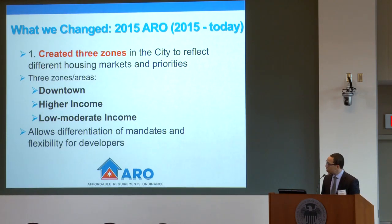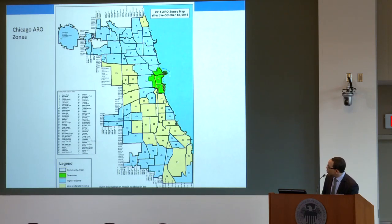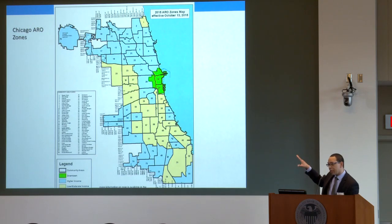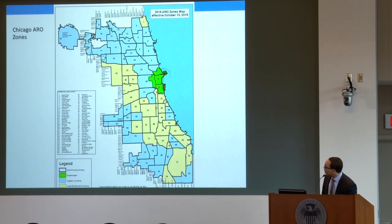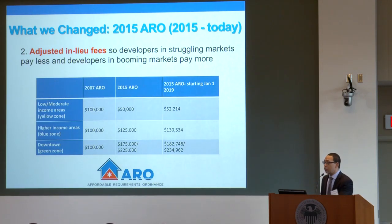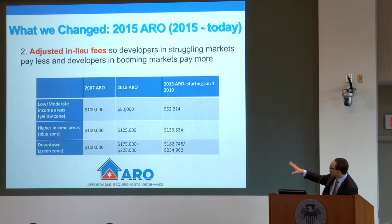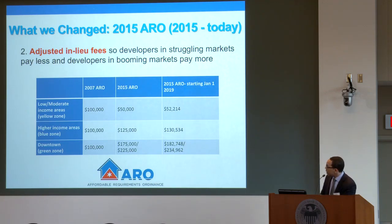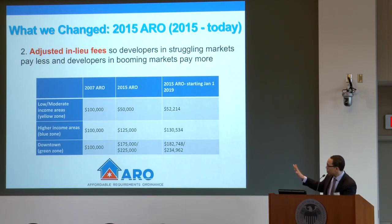The requirements under the ARO are different for the different areas. Here's a map showing the downtown D zones, our low-mod areas, and our higher income areas. We also adjusted our in-lieu fees based upon the kind of market the development was in. In our low-mod markets, we actually brought the fee down — currently it's about $52,000 adjusted annually by CPI. In higher income areas we increased the fee, and in downtown districts we increased the fee to $175,000 for rental and $225,000 for for-sale units.